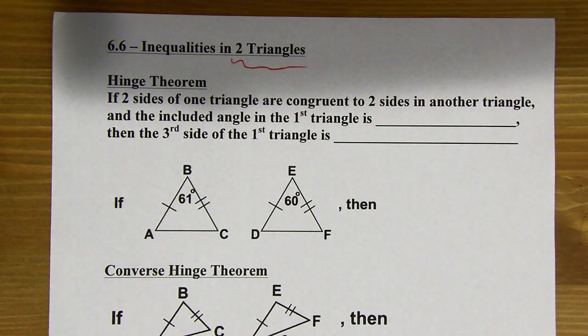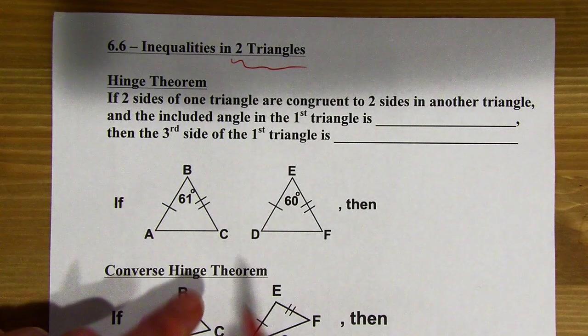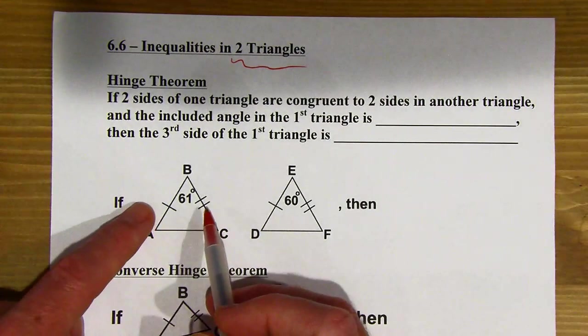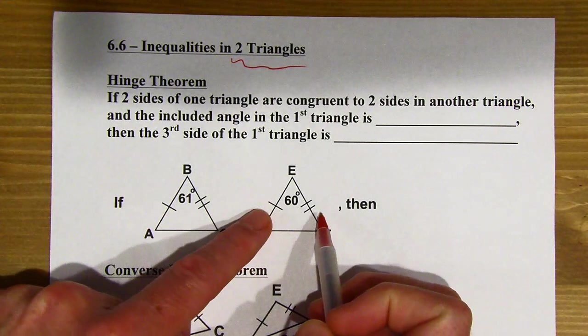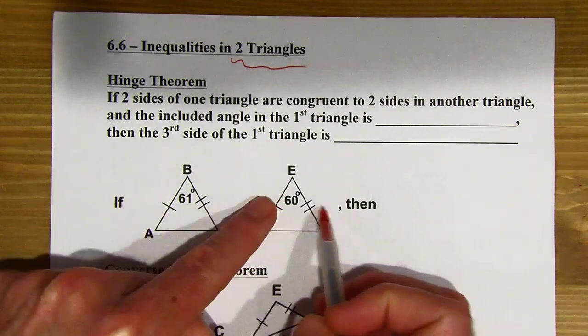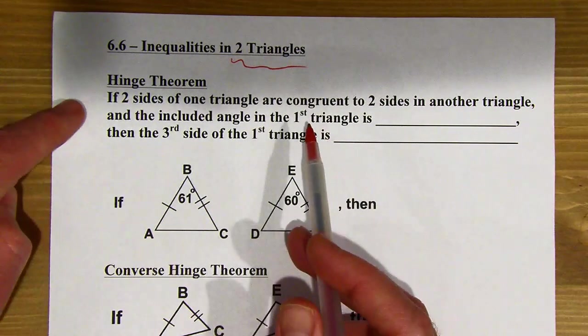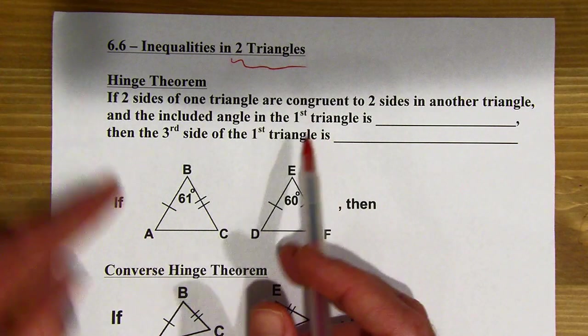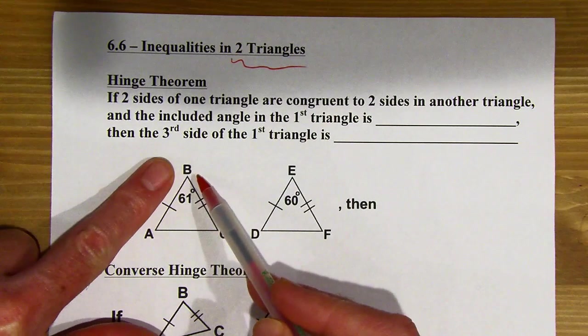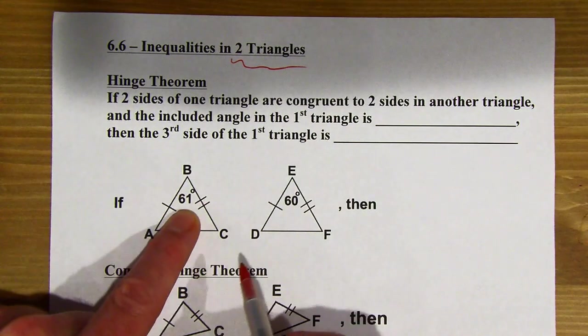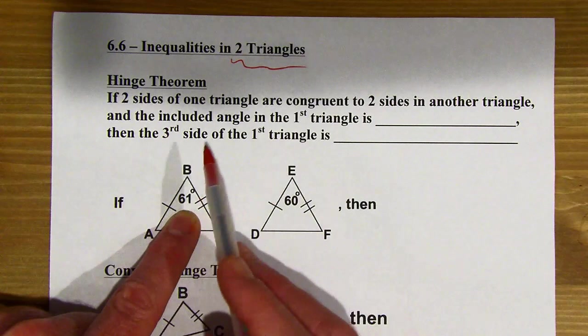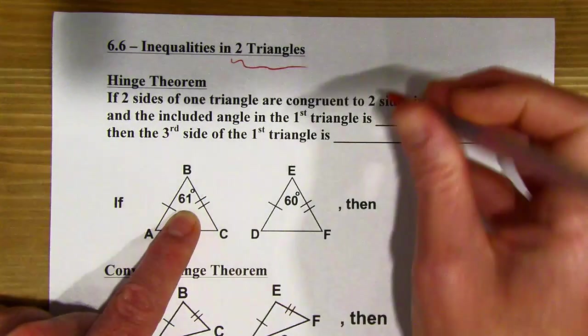And we start off with the hinge theorem. This says that if two sides of one triangle are congruent to two sides in another triangle, so that's just saying I've got like my SS situation, right? Like I have in this diagram. And the included angle in the first triangle, included between those two congruent sides, so this angle, if the included angle in the first triangle is larger,